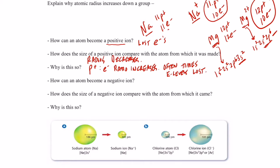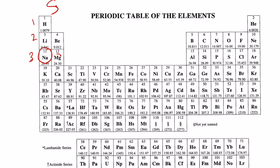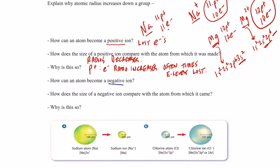What about negative ions? Let's use chlorine. Chlorine has 17 protons and 17 electrons. The chloride ion, Cl⁻, is a very common ion. How many protons does it have? Still 17 - you cannot change the number of protons. But if it's -1, how many electrons does it have? It has 18 electrons - it gained an electron without gaining a proton, forming a negative ion.